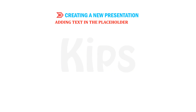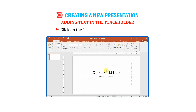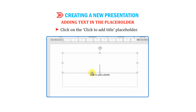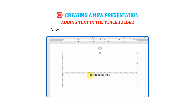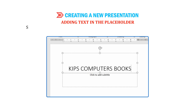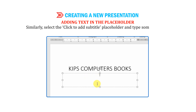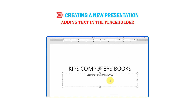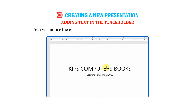Let us learn how to add text in a placeholder. Click on the Click to add title placeholder. The cursor blinks inside the text box. Now type some text, say 'Kips Computer Books'. Similarly, select the Click to add subtitle placeholder and type some text, say 'Learning PowerPoint 2016'. Now click outside the text box. You will notice the entered text appears on the slide in the slide pane.